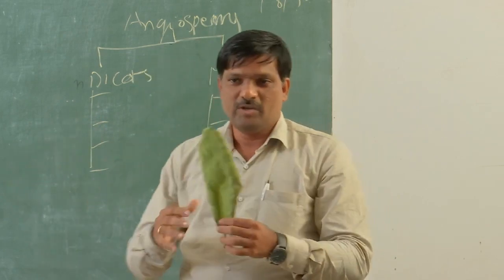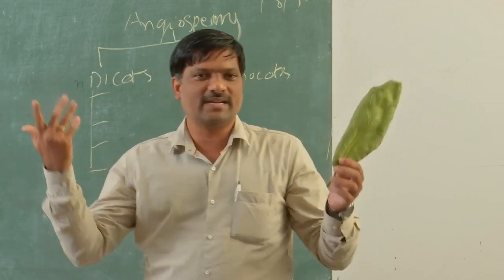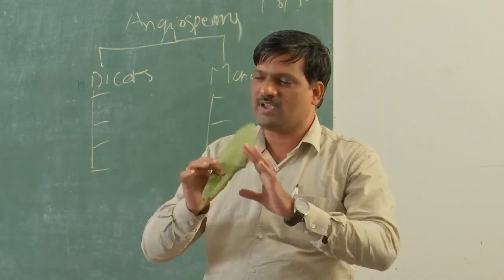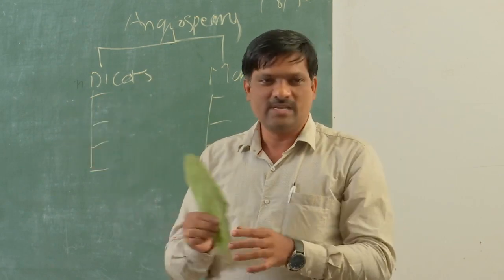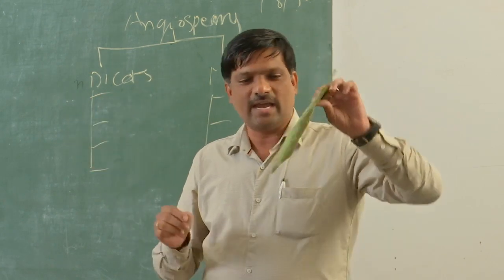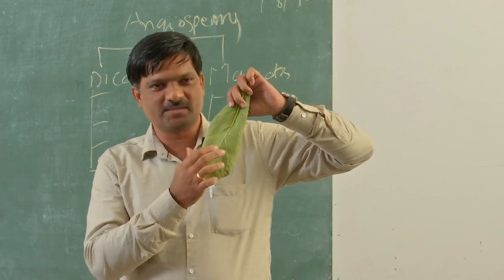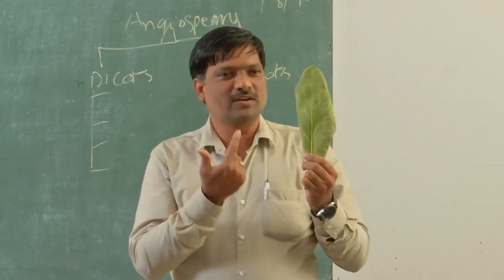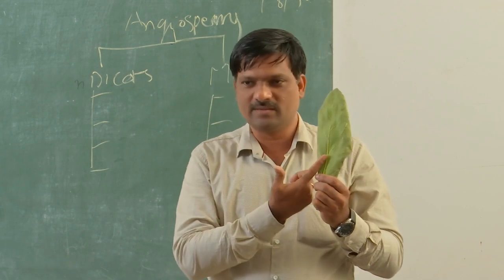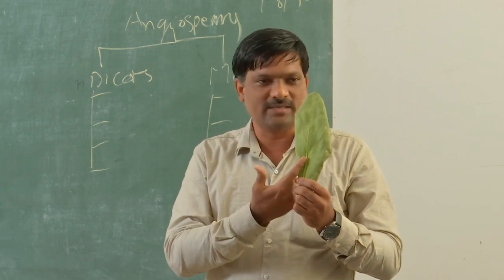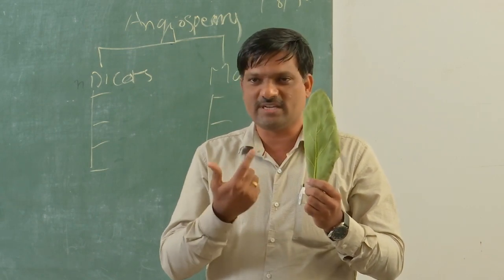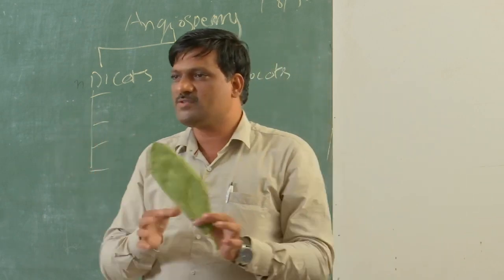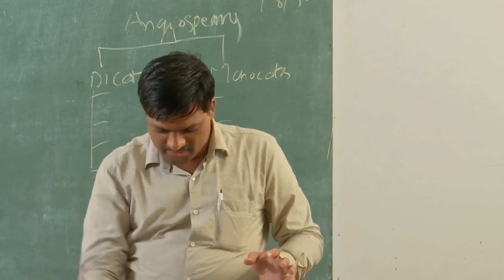You may not get a root, you may not get a seed, but you will always find leaves. Just pluck one leaf and check the venation. Here the veins are arranged in a net-like, or reticulate, manner — this is called reticulate venation. If the leaf has reticulate venation, you should immediately say that is a dicot plant.